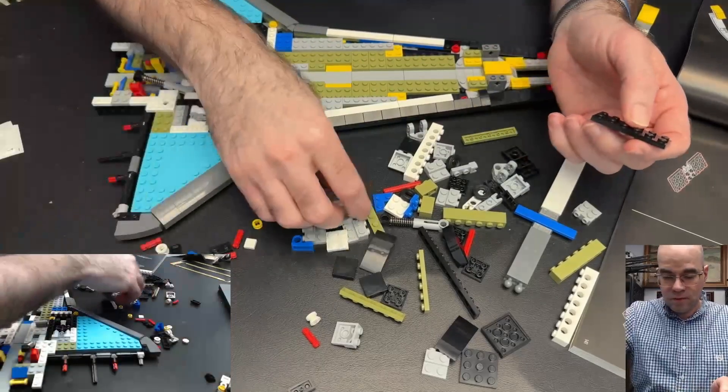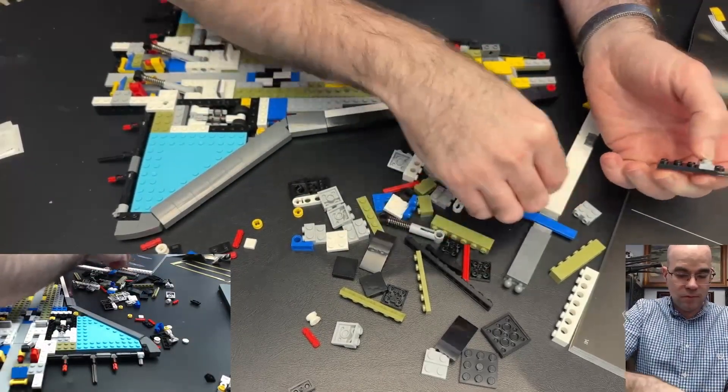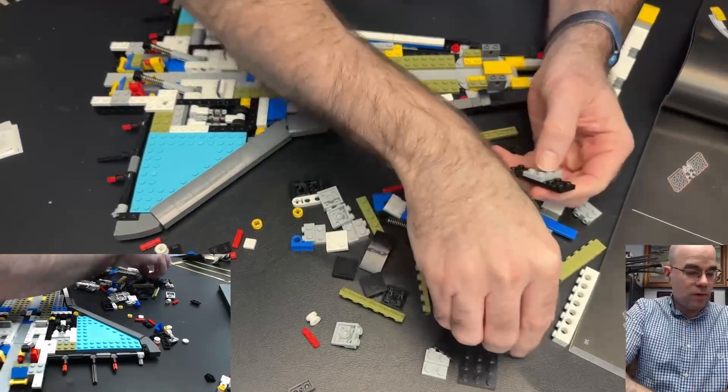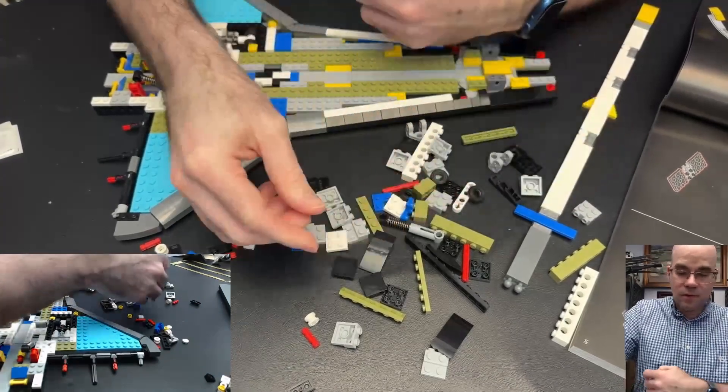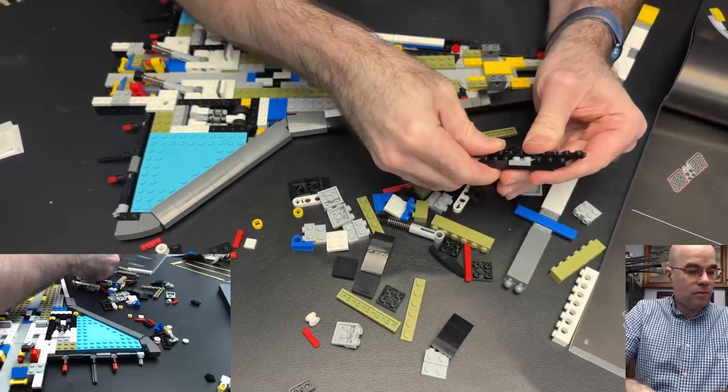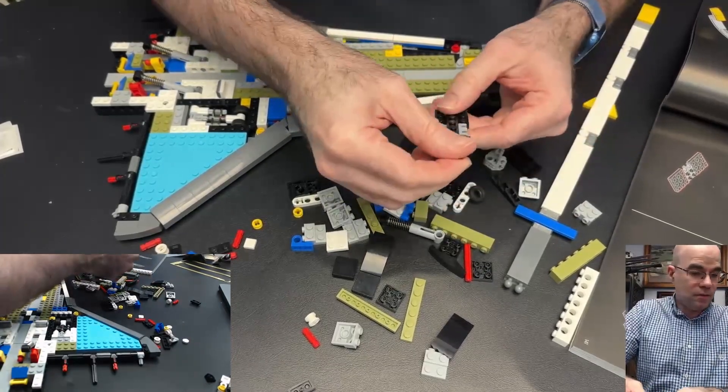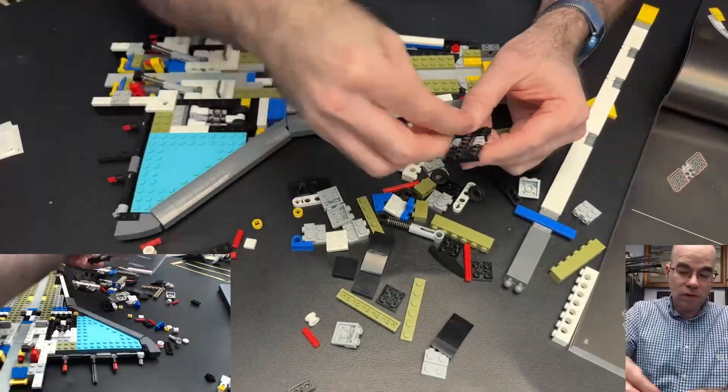Okay, we take two ball joint connectors, put those on there. We put two of these three by three plates, a one by ten plate, and two three by one tunnels.